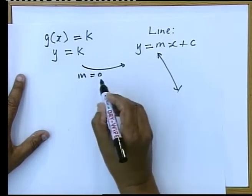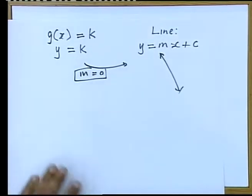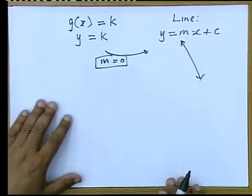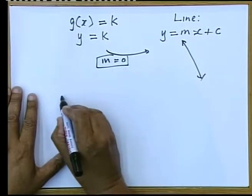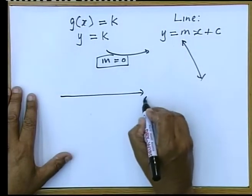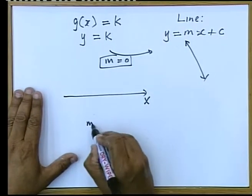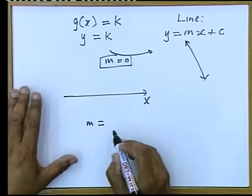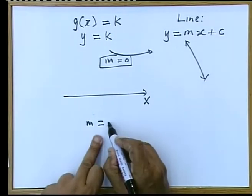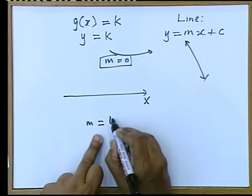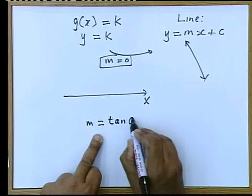If the gradient is 0, and we look at what it actually means, one just needs to for a moment look at the definition of the gradient. The gradient is the change in y over the change in x, but it is also the tan of theta.